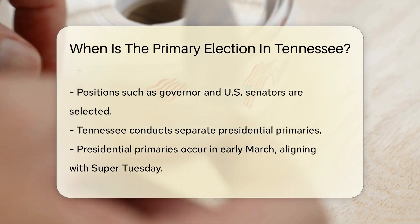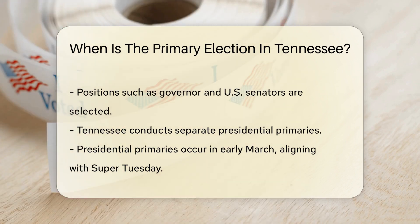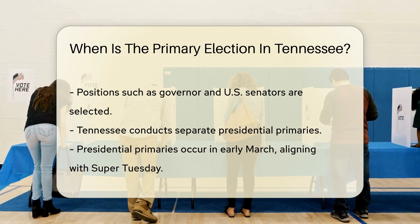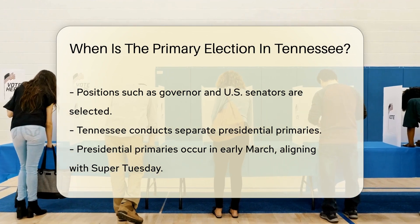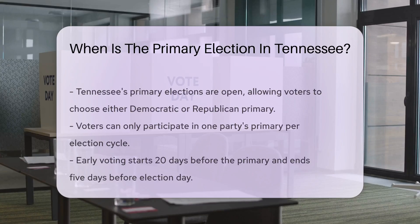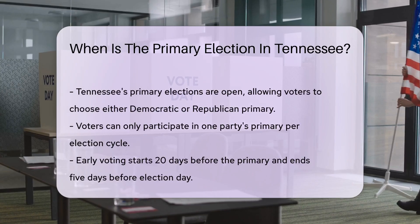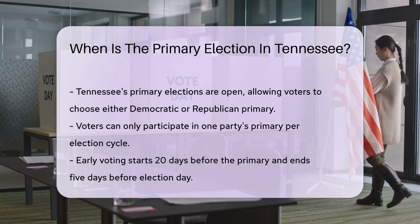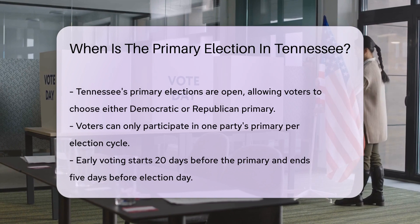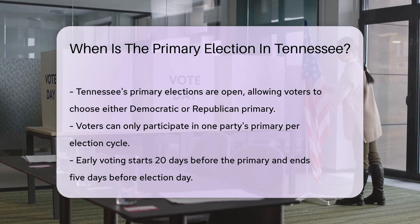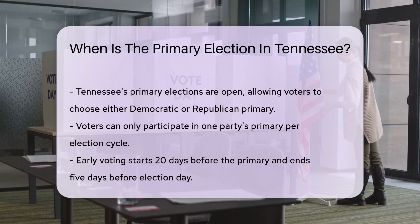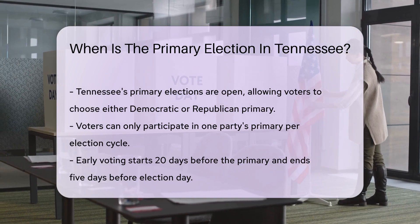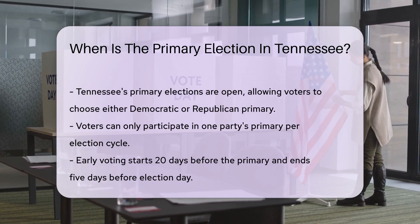Tennessee's primary elections are open, meaning voters do not have to declare a party affiliation. They can choose to vote in either the Democratic or Republican primary; however, they can only participate in one party's primary per election cycle.